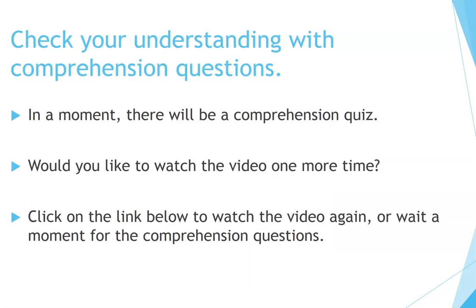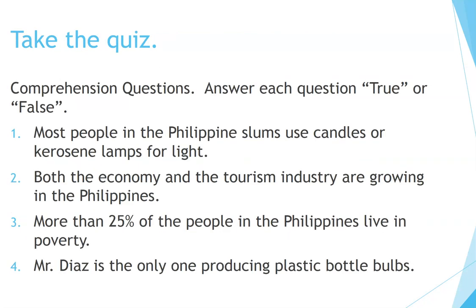Check your understanding with comprehension questions. In a moment, there will be a comprehension quiz. Would you like to watch the video one more time? Click on the link below to watch the video again, or wait a moment for the comprehension questions. Take the quiz. Answer each question true or false. Number one: Most people in the Philippine slums use candles or kerosene lamps for light. Two: Both the economy and the tourism industry are growing in the Philippines. Three: More than 25% of the people in the Philippines live in poverty. Four: Mr. Diaz is the only one producing plastic bottle bulbs.